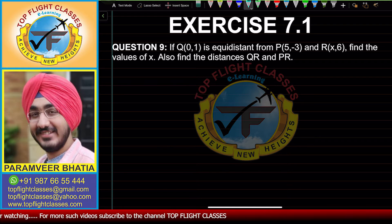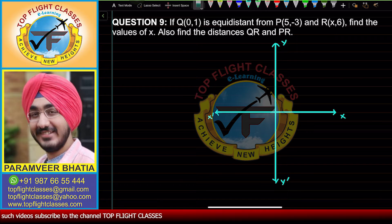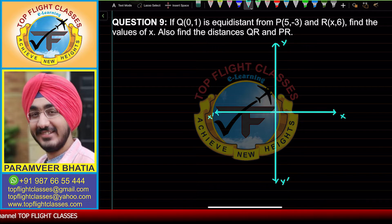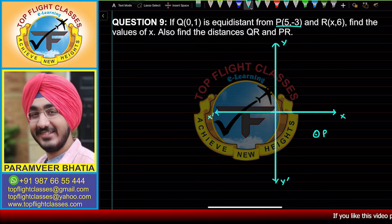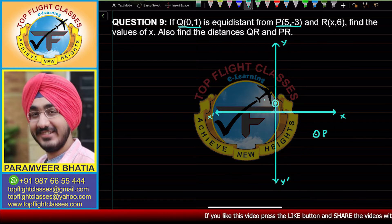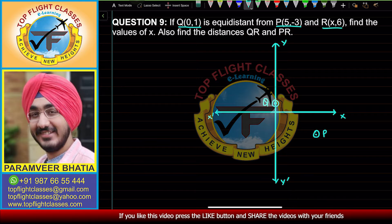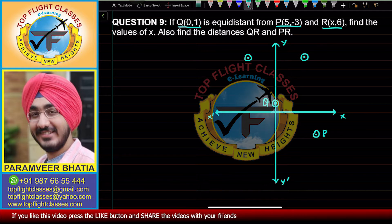Let's try to visualize this situation on the graph. We have point P at (5, -3), somewhere over here. Then we have point Q at (0, 1), somewhere over here. And we have point R at (x, 6), which could be either over here or over here — so there are two possible locations for point R.